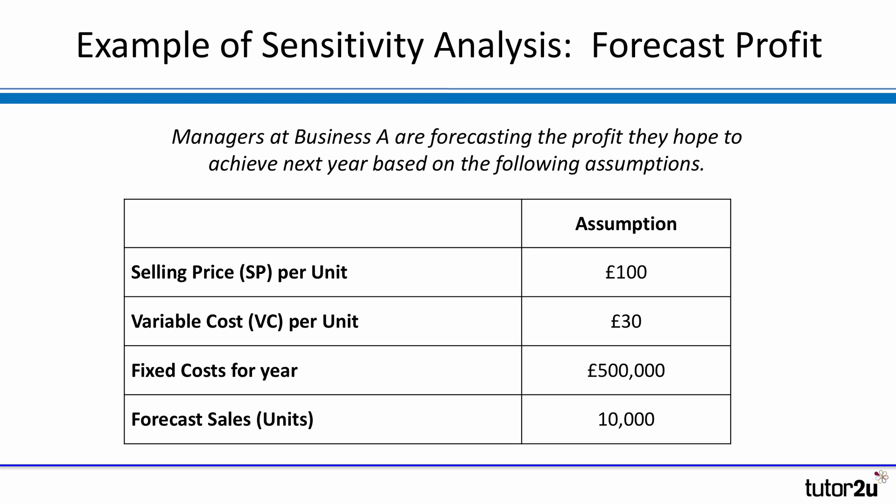Here's our small scenario. Managers at a business are forecasting the profit they hope to achieve next year, and they've made some assumptions: selling price per unit of £100, variable cost per unit of £30, fixed costs for the year of £500,000, and forecast sales of 10,000 units. Pause the video and try to calculate the forecast profit based on those assumptions.